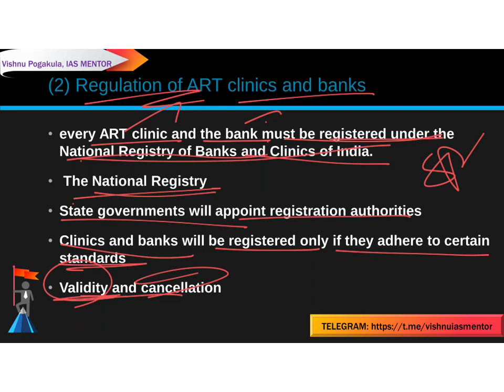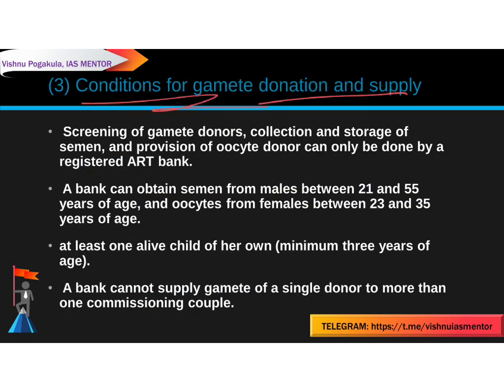The third feature covers conditions for gamete donation and supply. Screening of gamete donors, collection and storage of semen, and provision of oocyte donors can only be done by a registered ART bank. Semen — the male reproductive fluid containing spermatozoa — will be collected and stored only through registered art banks; otherwise it will be illegal.